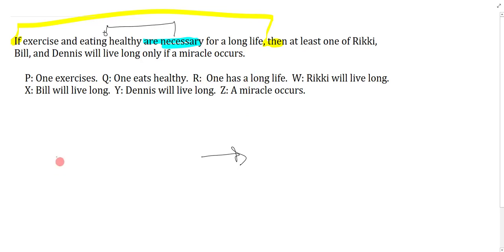The condition is this one because it's this that is necessary, so that's what goes in the consequent. For a long life, one has a long life—that's R—and then the necessary part is exercise and eating healthy, P and Q. Now to preserve this as the main connective and to make a well-formed sentence, I'm going to put brackets around everything in the antecedent.